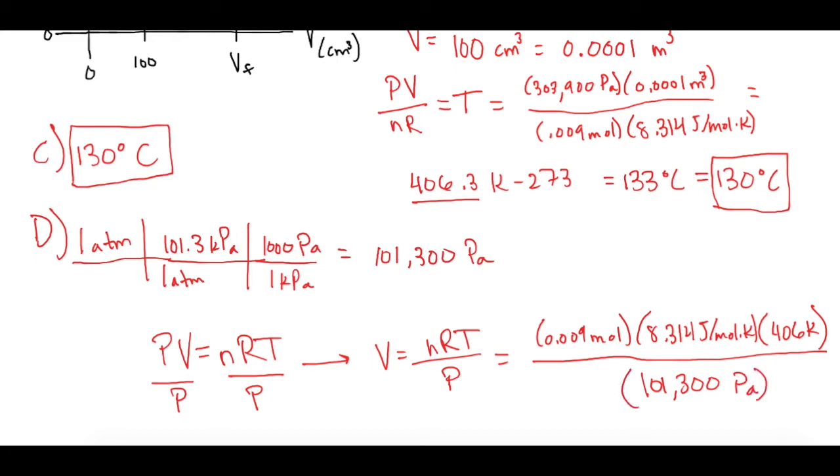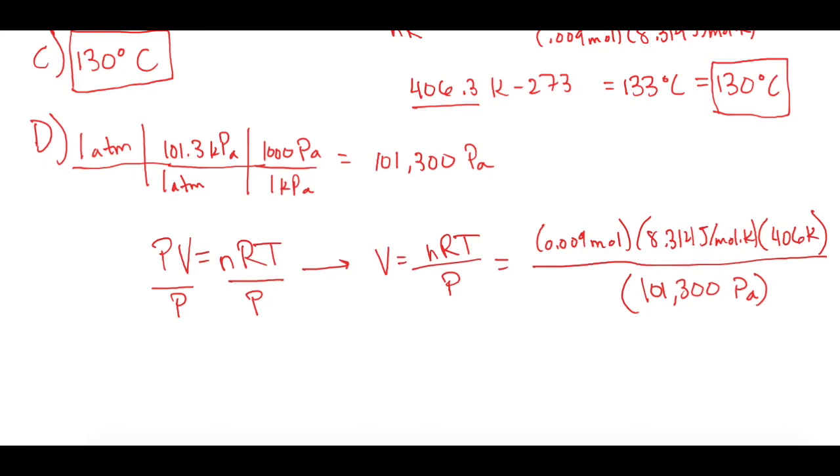And so our final volume for part D will give you, straight out of the calculator, 0.0002975 cubic meters. So now if we go to cubic centimeters we'll move the decimal place back 6. 1, 2, 3, 4, 5, 6. That gives us 297.5 cubic centimeters or 300 cubic centimeters.